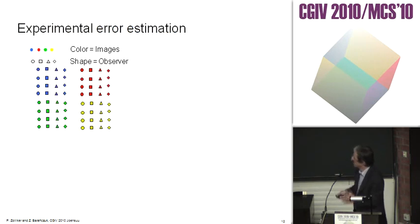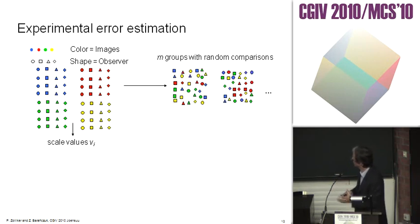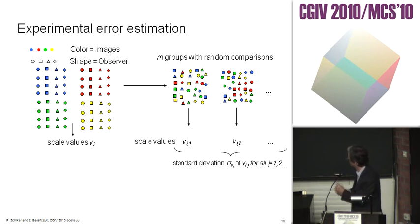I introduce now a fourth error estimation. If you calculate the scale values from an experiment with different colors meaning different images and different shapes meaning different observers, what I can do is from the data set put it into m groups with random comparisons. For each group calculate the scale values, then take the standard deviation of those values for all different j's, and I can extract the experimental error of the scale values by scaling this sigma correctly.